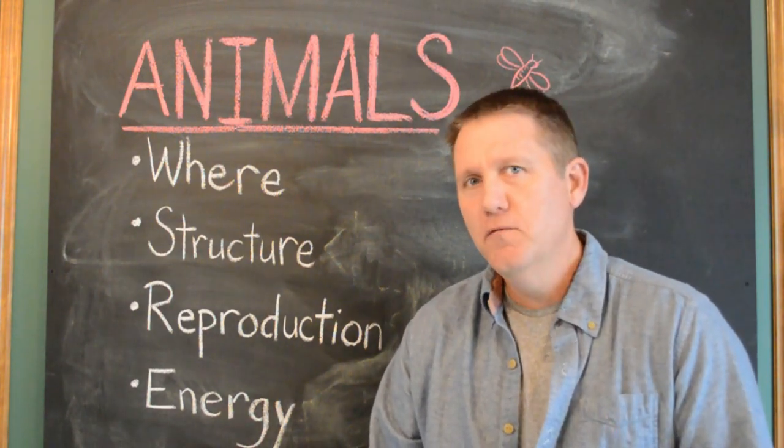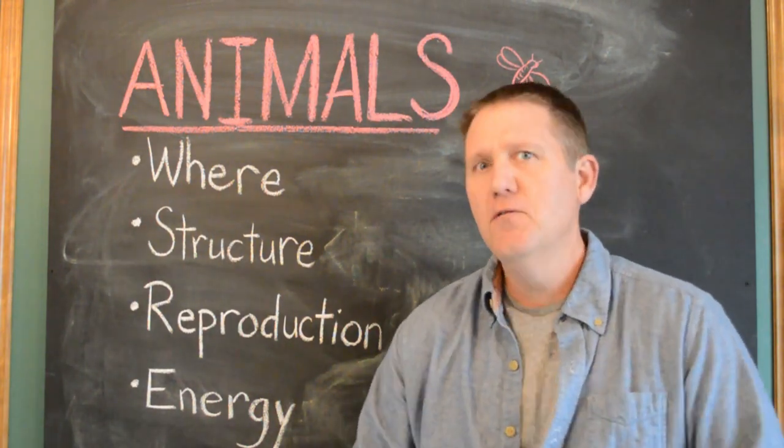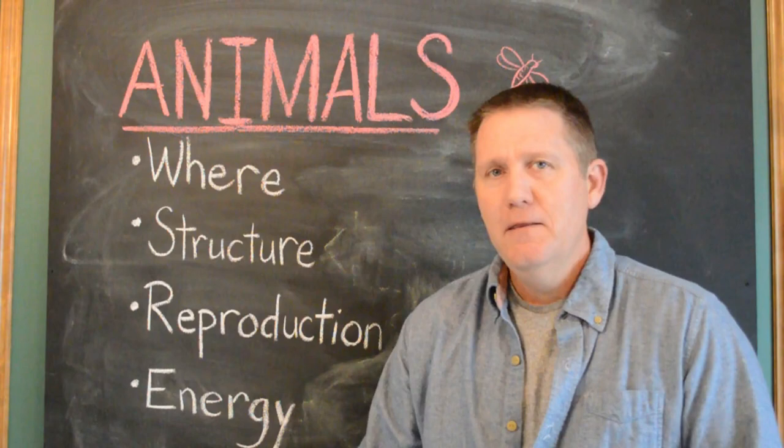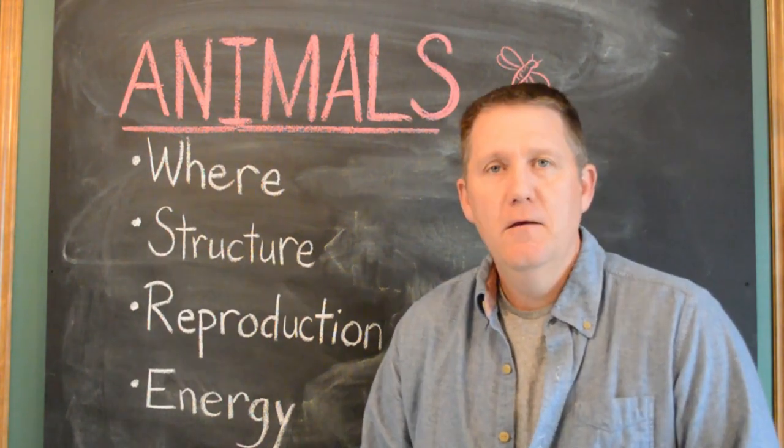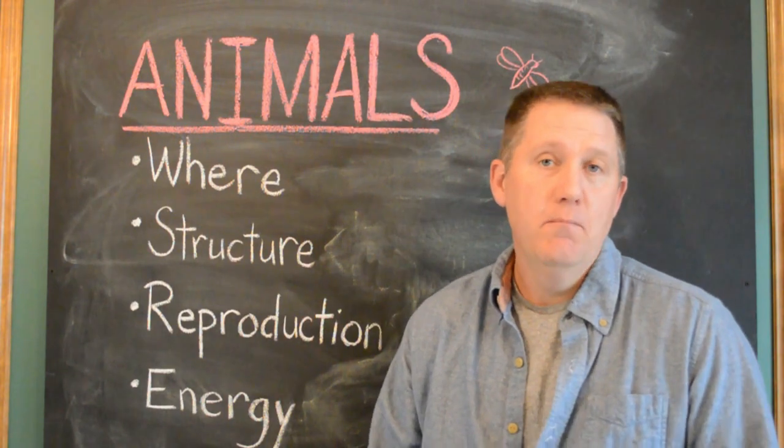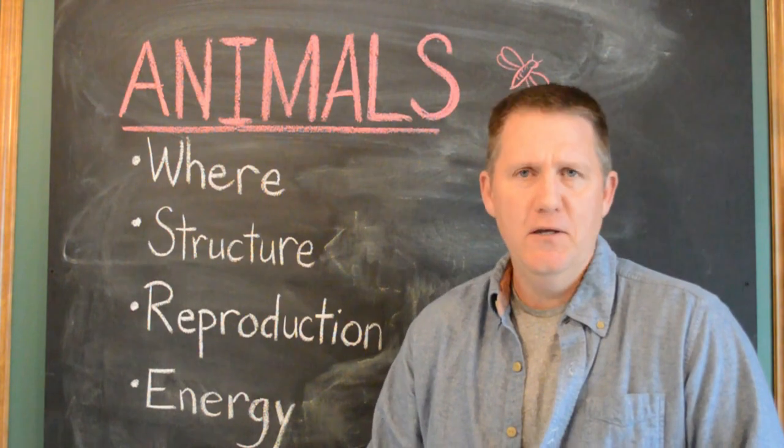Although they might have a nervous system and two little eyes staring back at you, so they kind of feel familiar in a way, they still don't stay warm on a cold day. They don't even have a backbone, much less a skeleton. So most animals are really different than us.